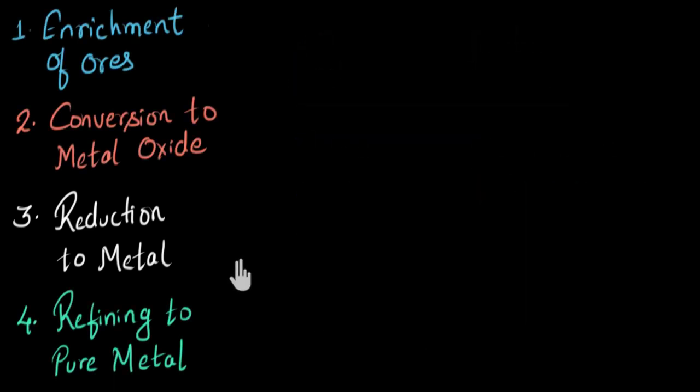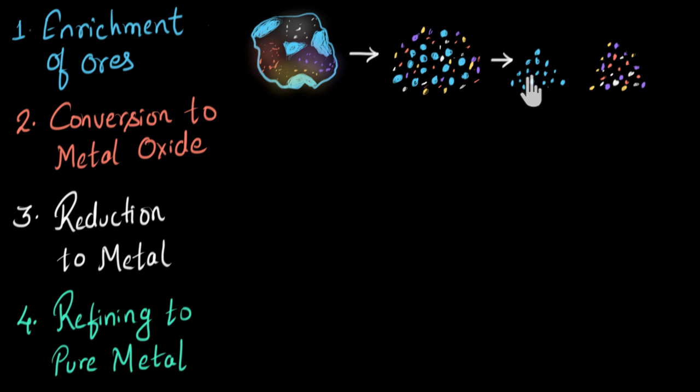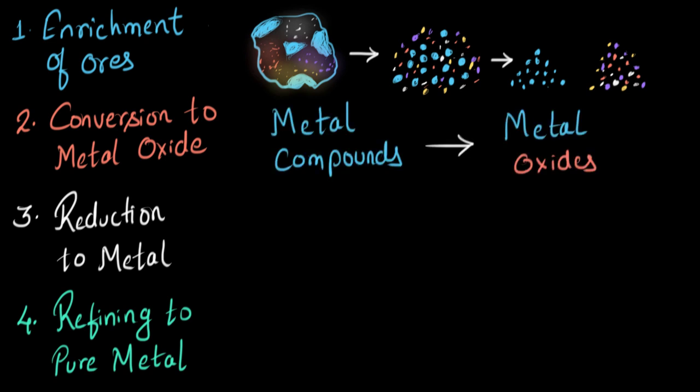So far, we have got our metal out of the metal ore. We started with enrichment of the ore, where we separated the metal compound from the impurities. Then we converted this metal compound into metal oxide. And then we reduce the metal oxide to get the metal. But this metal is still not 99.99% pure. It still has some impurities, some chemicals that we need to get rid of. And for this, we will have to refine the metal to get pure metal. We talk about the steps of refining in a separate video.